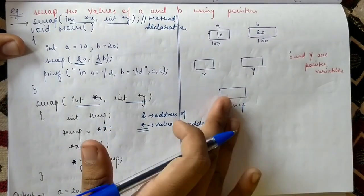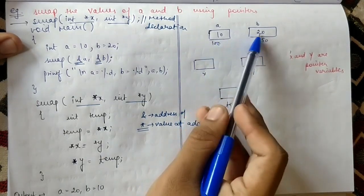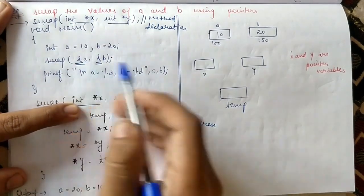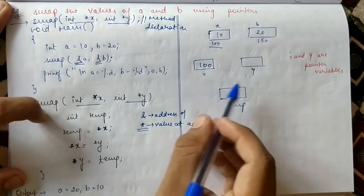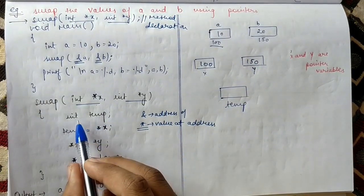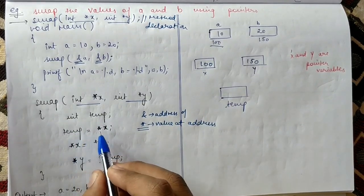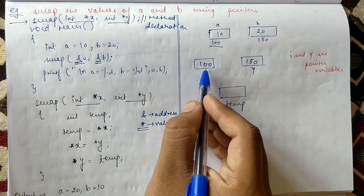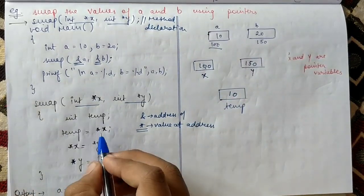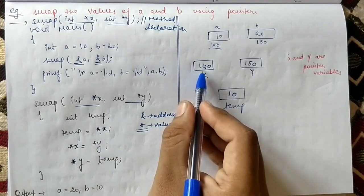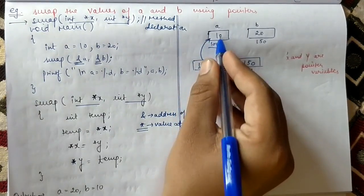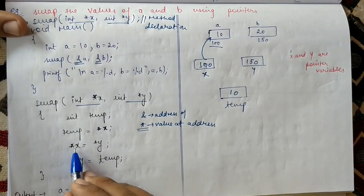Let me explain with a diagram. Initially a is 10 and b is 20; let's say their addresses are 100 and 150. When we send the addresses, x will contain 100 (the address of a) and y will contain 150 (the address of b). We declare temp, and when we say temp equals star x, that means the value at address 100, which is 10. So temp holds 10. Star x means: x is 100, and the value at address 100 is 10.